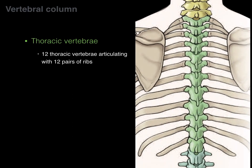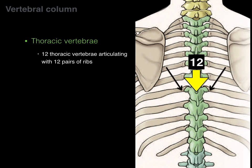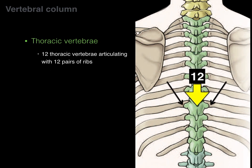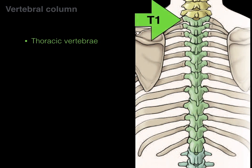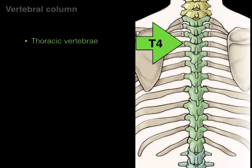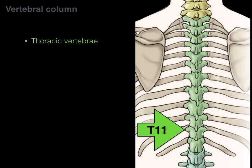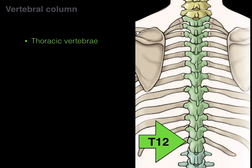Now let's look at the thoracic vertebrae. There are 12 thoracic vertebrae, which articulate with the 12 pairs of ribs. For every thoracic vertebra, there is a pair of ribs that articulate and come off — T1 through T12 — giving us 12 vertebrae articulating with 12 pairs of ribs.